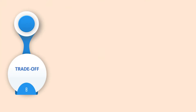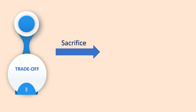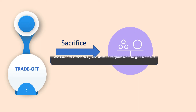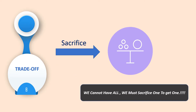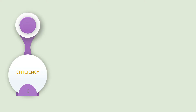The next concept is trade-off, which means sacrifice. We cannot have all products at the same time because we have very limited resources — limited money — but unlimited wants. So we must sacrifice some products to get one product.